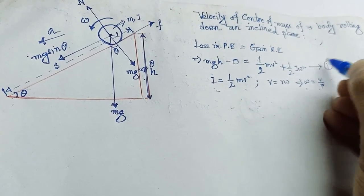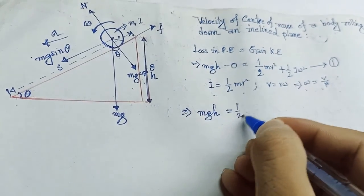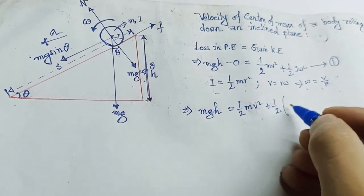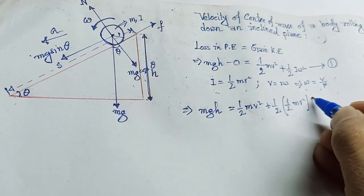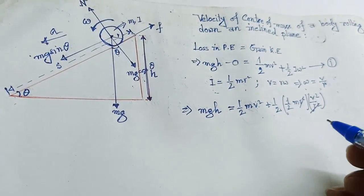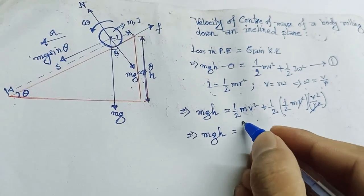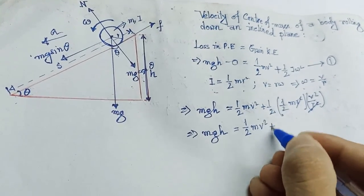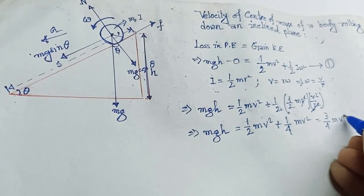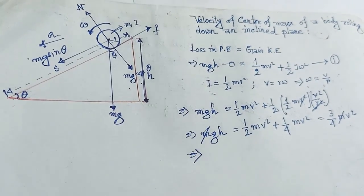After substituting i equal to half m r squared and omega equal to v divided by r, we get: mgh equals half m v squared plus half of (half m r squared) times (v over r) squared. This simplifies to mgh equals half m v squared plus one-quarter m v squared, giving mgh equals three-quarters m v squared. We can cancel m from both sides.